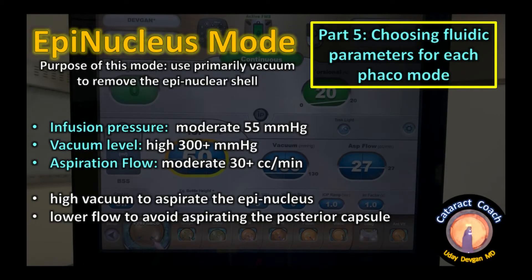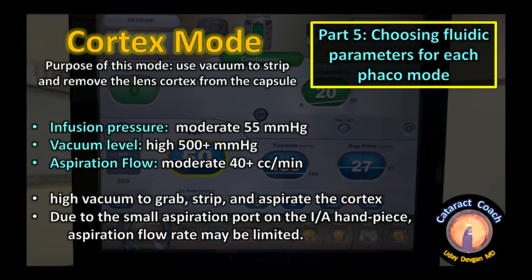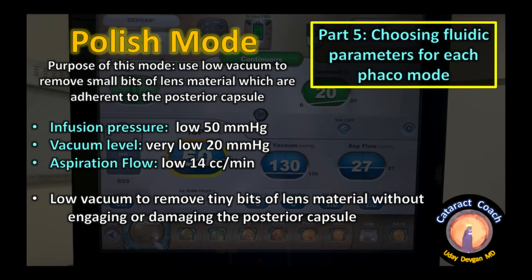Epinucleus mode uses primarily vacuum to remove the epinuclear shell: moderate infusion pressure, moderate flow, and relatively high vacuum. Lower flow is used to avoid aspirating the posterior capsule — we only want to aspirate the epinucleus. Cortex mode requires high vacuum to strip and remove lens cortex from the capsule: moderate infusion pressure, very high vacuum, and high aspiration flow. Keep in mind the IA port is small and may limit flow.